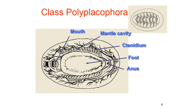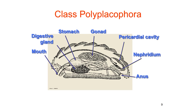If you were to flip a chiton over, you would see their general body structure. From a side view, you can see they have a complete digestive tract, and they have a digestive gland that secretes enzymes for them.